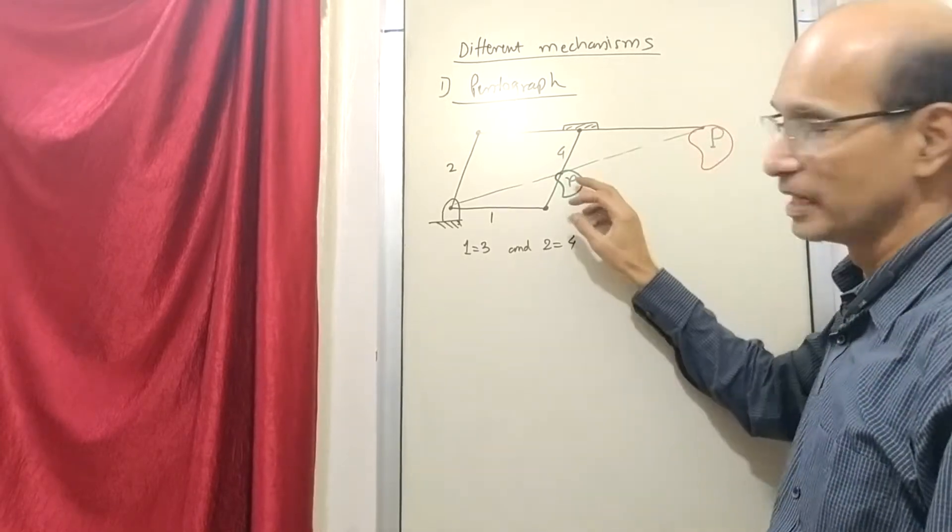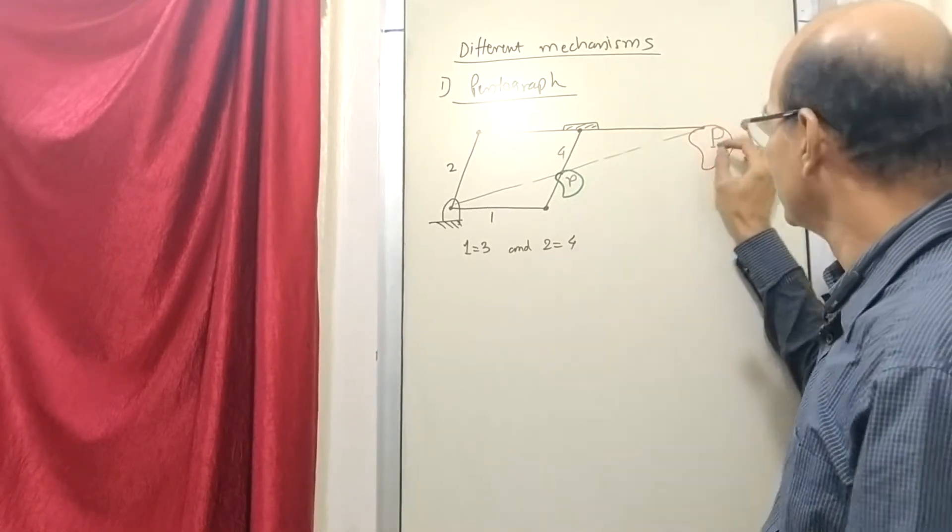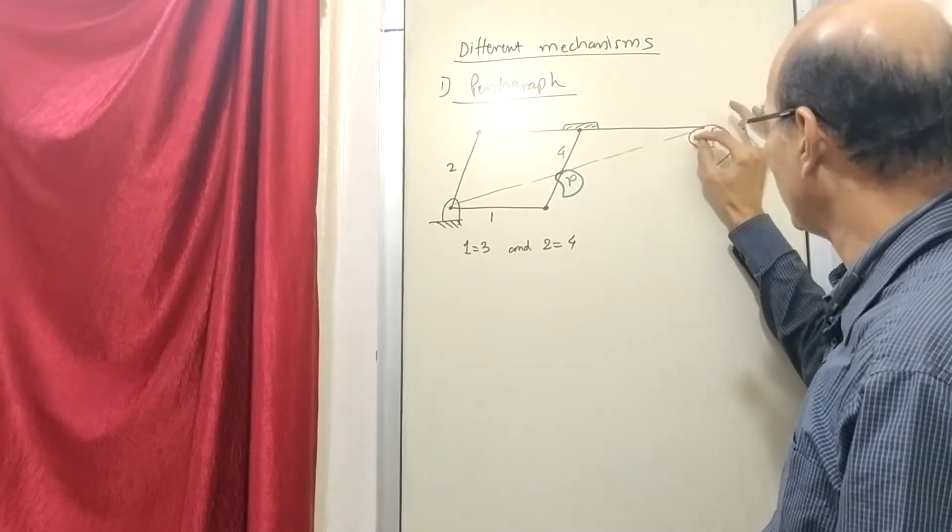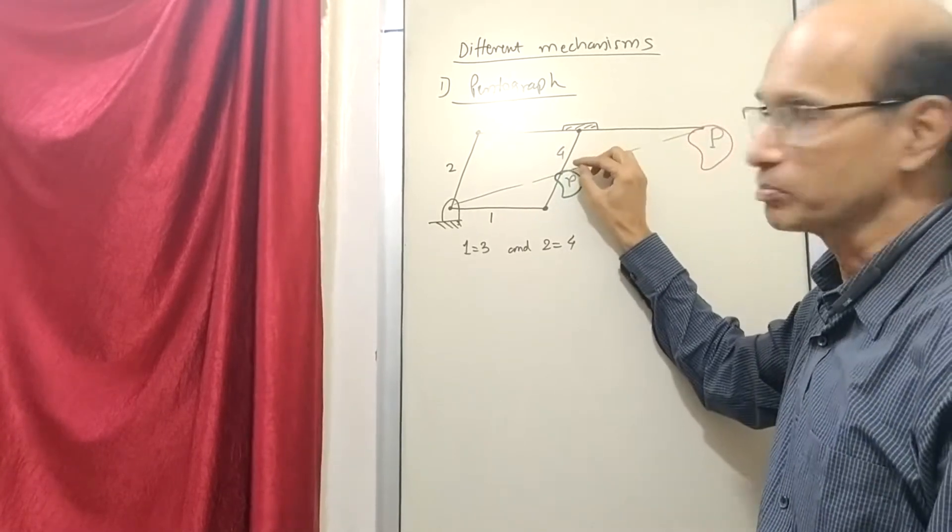The cutter is here and the template is here. This marker is moving on the template and you are going to get the cutting action of a smaller size here.